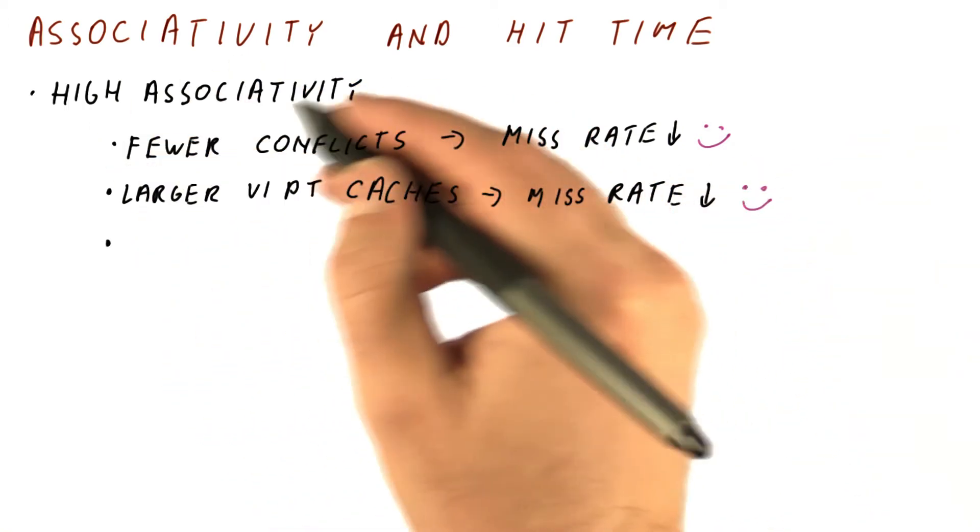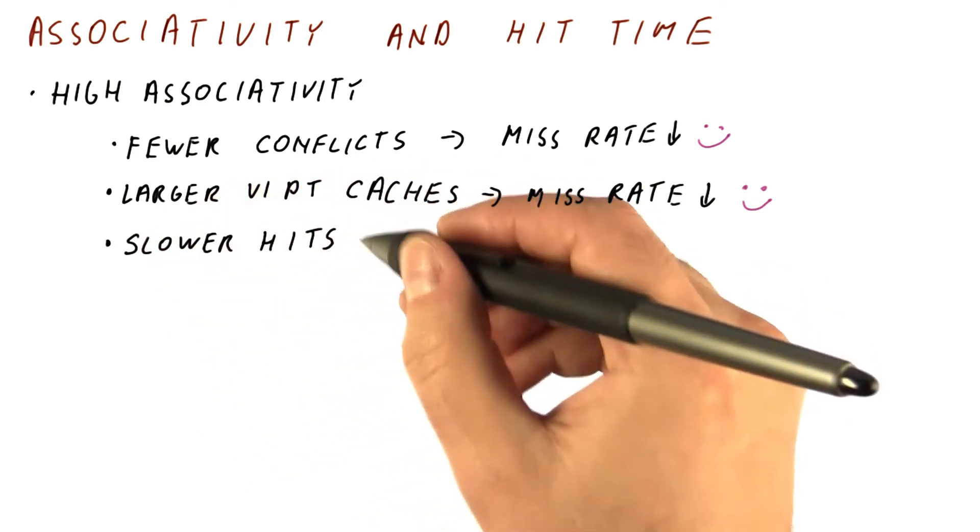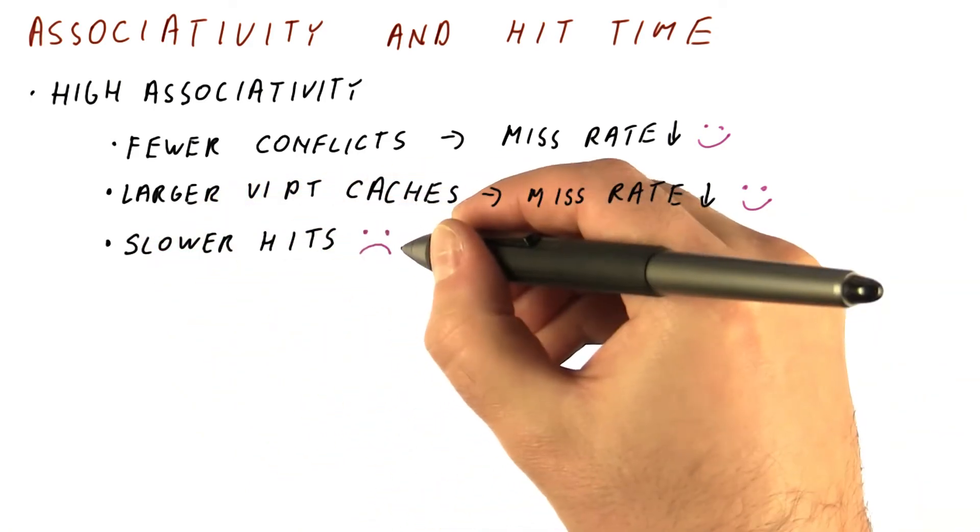But high associativity leads to slower hits. The hit time goes up, and that we don't like.